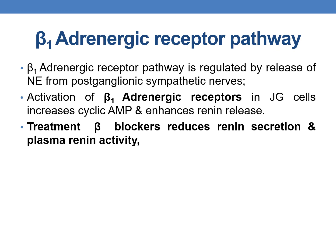The beta-1 adrenergic receptor pathway is regulated by release of norepinephrine from postganglionic sympathetic nerves. Activation of beta-1 adrenergic receptors increases cyclic AMP and enhances renin release. Therefore, treatment with beta-blockers reduces renin release and plasma renin activity.